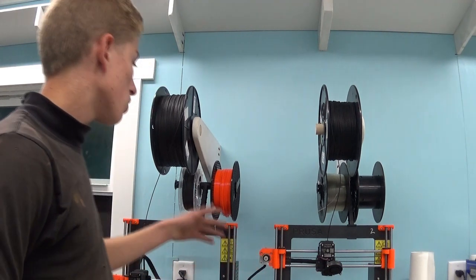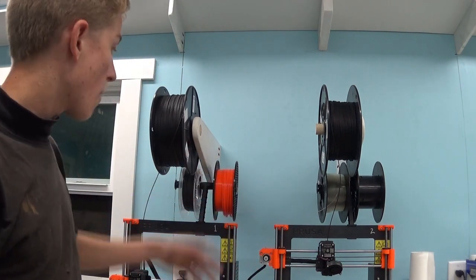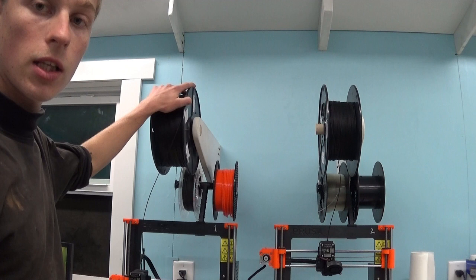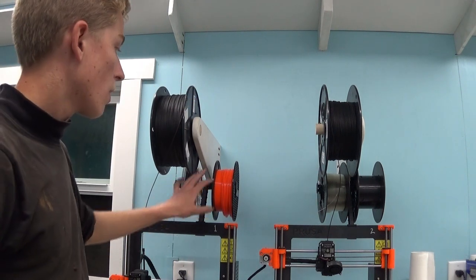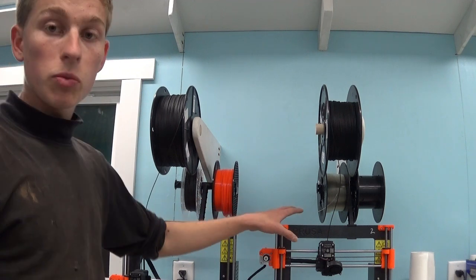I can do multi-color prints very easily without having to swap plastic around. So I have my primary plastic, the large roll, up above. Then I can run my smaller supplemental plastic, like this carbon fiber right here, off the back much more easily.